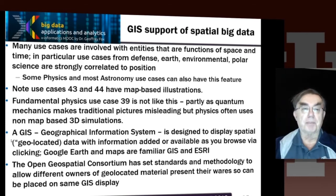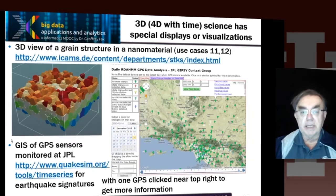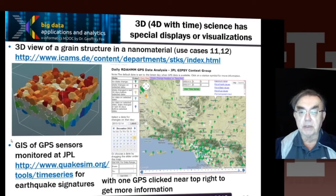So different producers and owners of geolocated material can present that material in a way that can be used. You can have the same map with data from NASA, Google, the U.S. government, your favorite foreign country, and so on. Here on the right we have a nice example from use case 44, from an earthquake simulation — the QuakeSim website, which has a lot of information predicting or looking at the consequences of earthquakes.